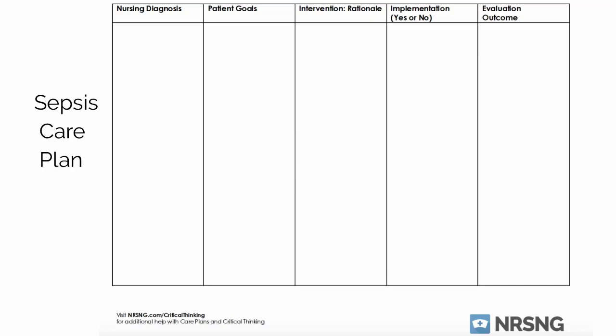The first nursing diagnosis I did for sepsis is ineffective thermoregulation related to systemic inflammatory response, also called SIRS, as evidenced by thermometer readings. I did this sepsis care plan as if it's a patient we are actively caring for right now, because if a patient has sepsis they are going to be in the hospital. They will have a very difficult time with all of their vital signs, and their temperature is going to fluctuate — that is something you need to keep your eye on.